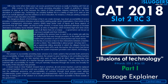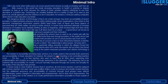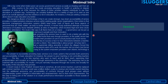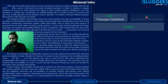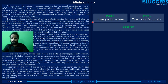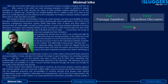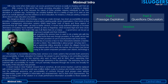The link to both parts — including the second part — is available in the description, along with a link to attempt the passage. For those watching for the first time: every session caters to one RC and is divided into two parts. Part one covers the passage explanation using a schematic diagram; part two discusses the questions in detail. You can also attempt the RC by clicking the link in the description.